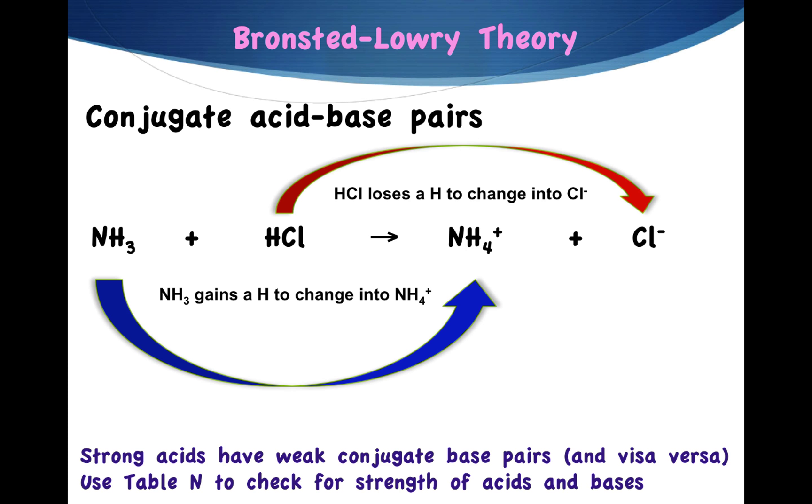An acid on one side changes into a base on the other side. Notice that this is not a neutralization reaction. This is a reaction in which hydrogen ion is exchanged between substances. Now strong acids have weak conjugate base pairs and vice versa. You're going to go to table N to check for the strength of acids and bases. Now if you look at HCl on table N, you'll see that HCl is a very strong acid. That means that the chloride ion is a very weak base.